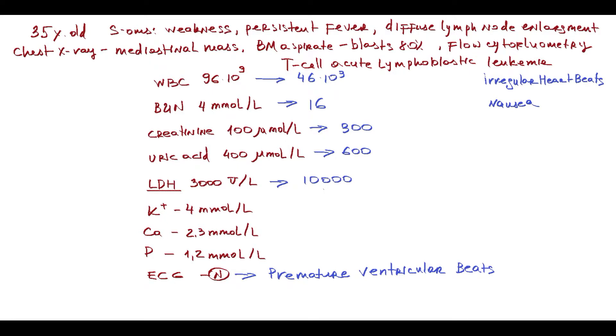Lactic dehydrogenase level also increased from 3000 to 10,000 units per liter. There are also changes in electrolytes levels. Potassium increased from 4 to 6.5. Calcium decreased to 1.5, and phosphorus level increased. So, it's tumor lysis syndrome, which is potentially a deadly complication of tumor treatment.